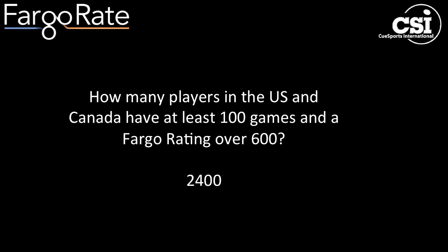How many players in the U.S. and Canada have at least 100 games in our system and a starter rating over 600? It's 2,400 right now. So it's in the thousands — the number of players that cannot slip into a division they don't belong in and cannot sneak their way onto a team where they don't belong.